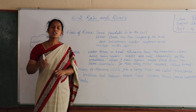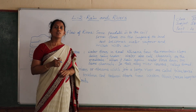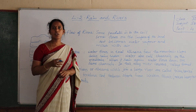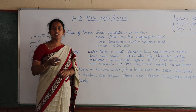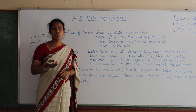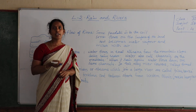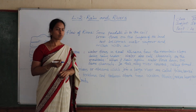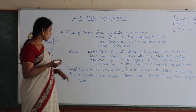Eastern parts receive less rainfall. Some rivers like Ikti and Manjira depend on the rainfall and are seasonal rivers.